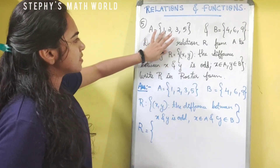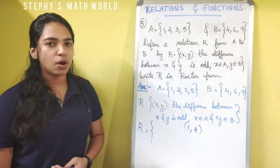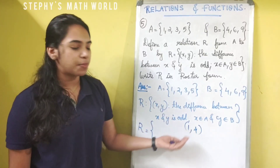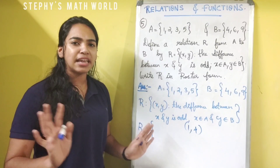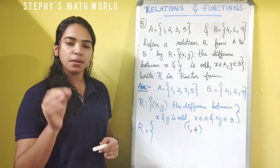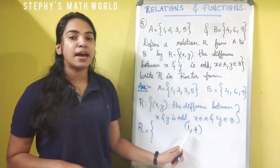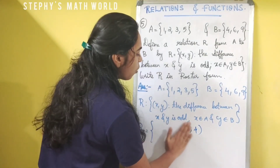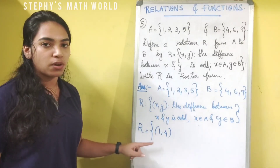The ordered pair (1, 4): the difference between x and y is 1 minus 4, which gives us minus 3. That is an odd number, so this ordered pair is included. The pair (1, 4) is the first pair we include.